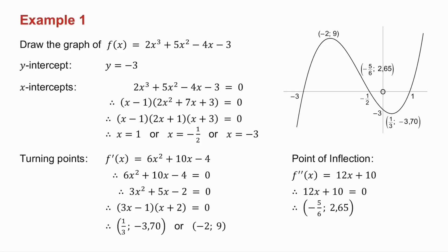Now to draw my graph: the y-intercept is minus three, I have three x-intercepts, there are the two turning points, and the point of inflection is that middle point. So there is my graph of f of x.